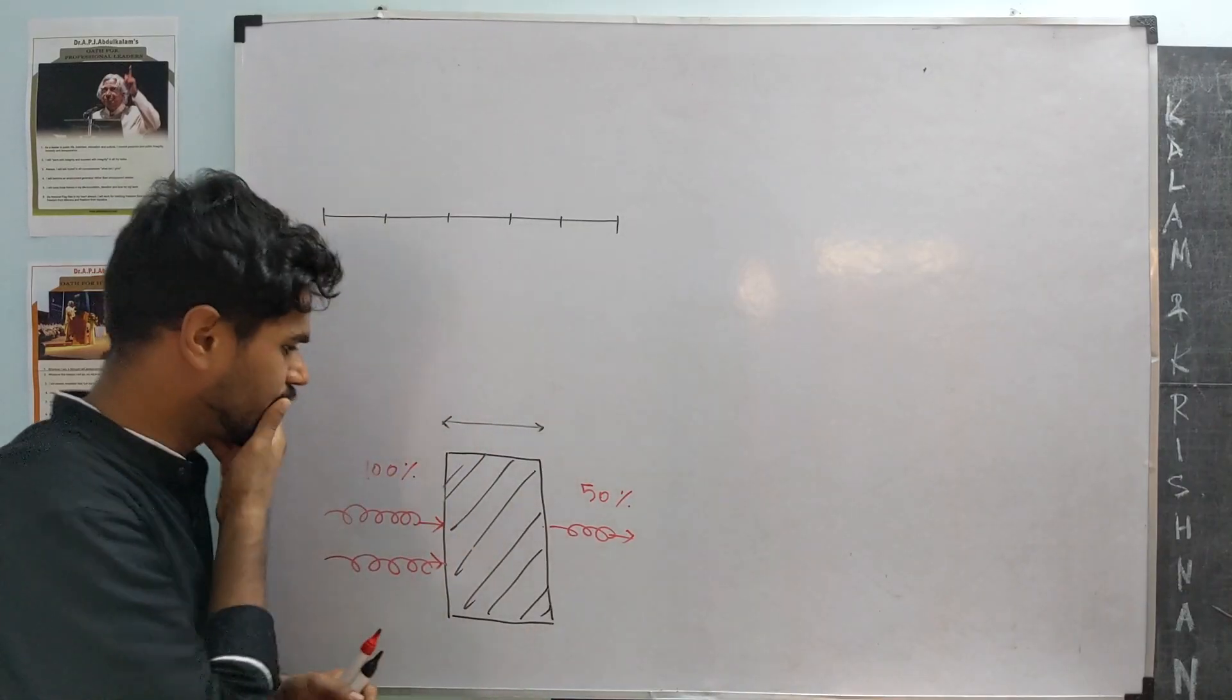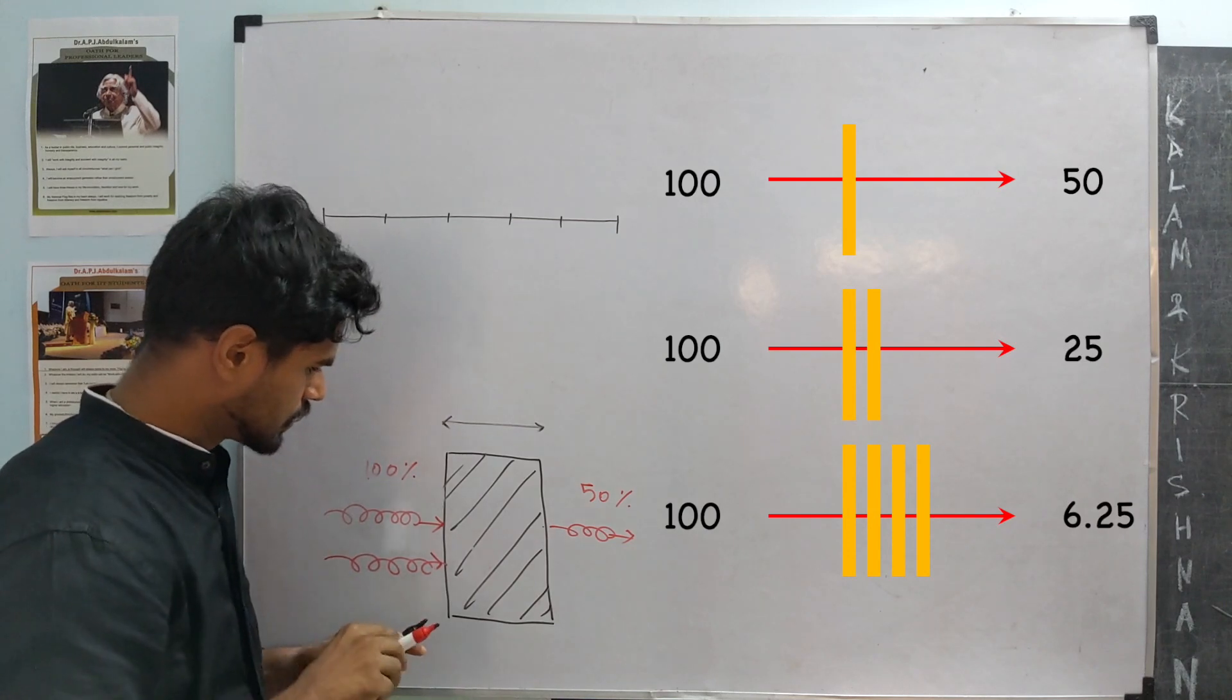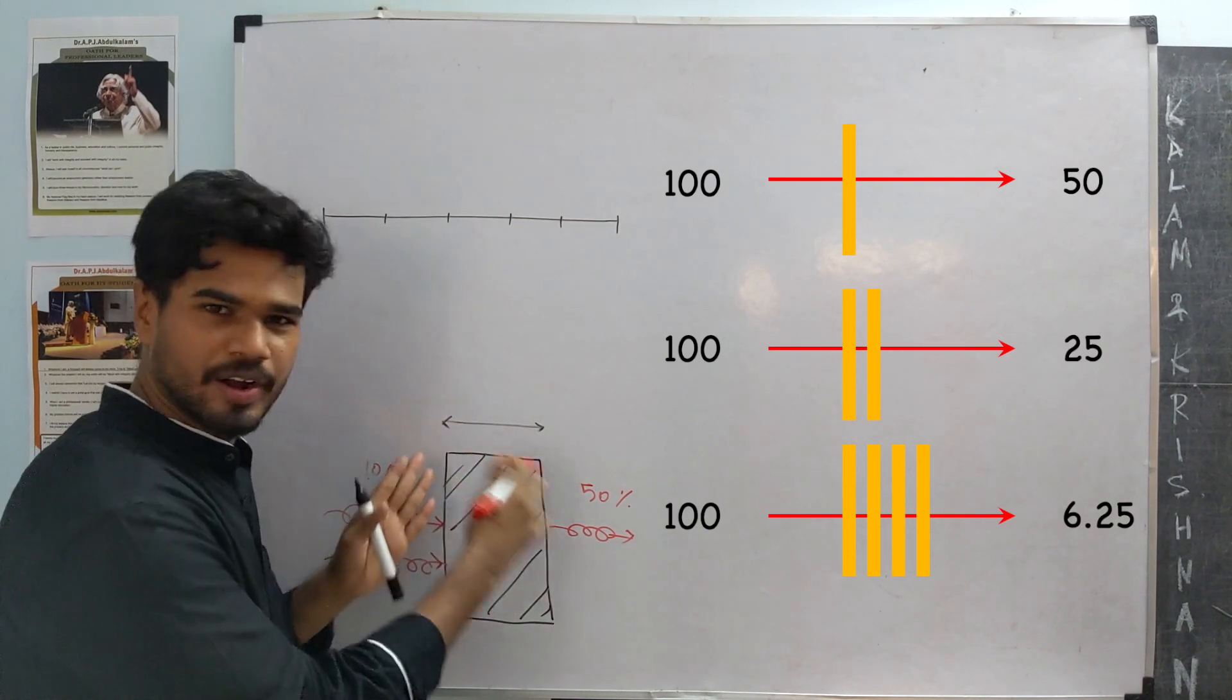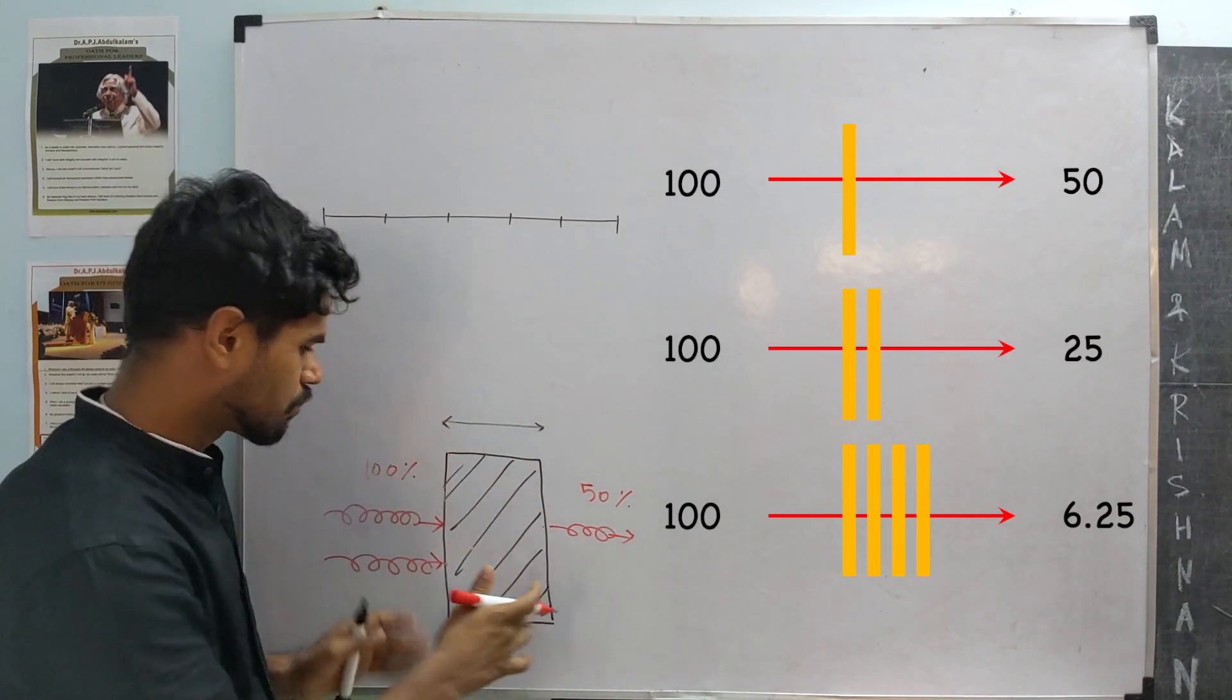First thing is, what is half-value layer? So, we have some sodium iodide crystal block, right? Let's call it a block.